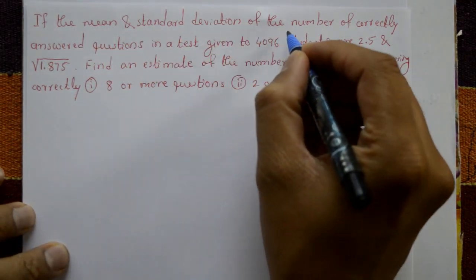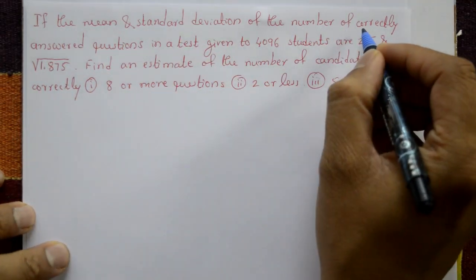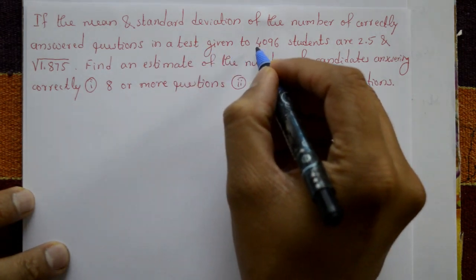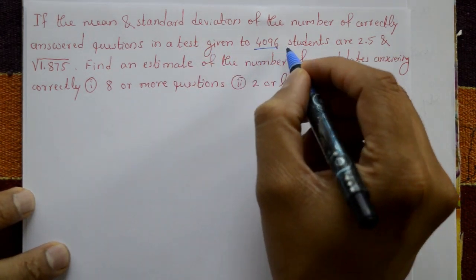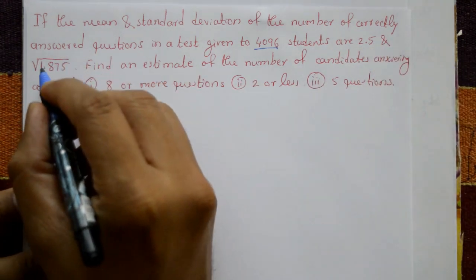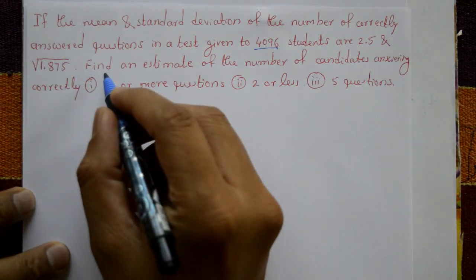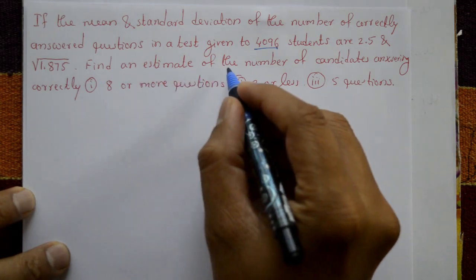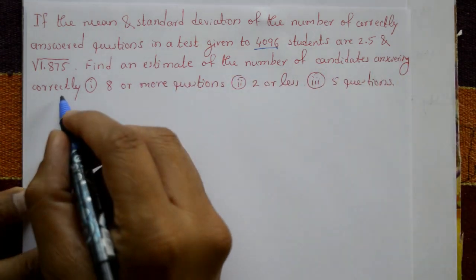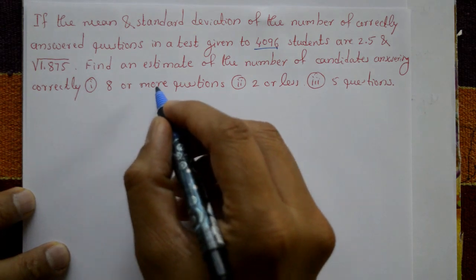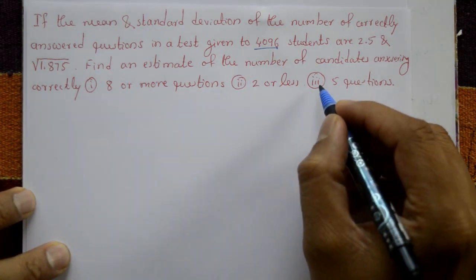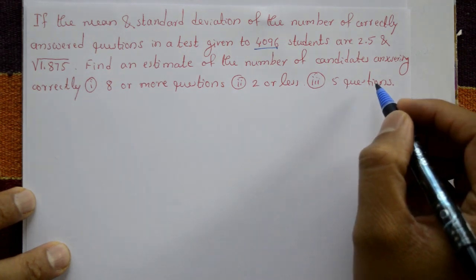If the mean and standard deviation of the number of correctly answered questions in a test given to 4096 students are 2.5 and √1.875, find an estimate of the number of candidates answering correctly for: Case 1 – eight or more questions, Case 2 – two or less questions, Case 3 – exactly five questions.